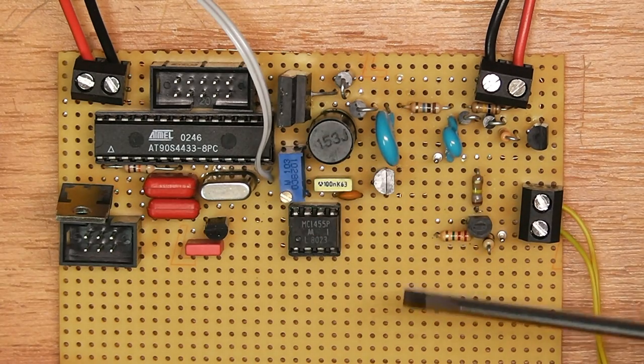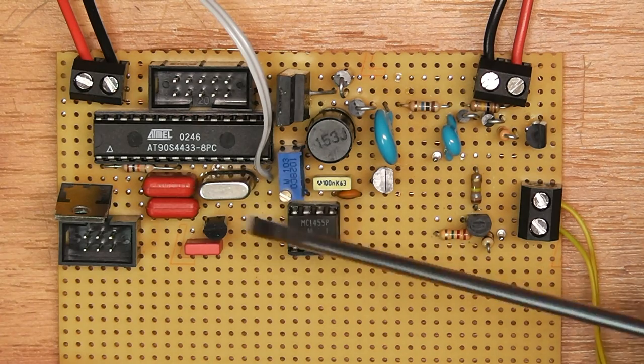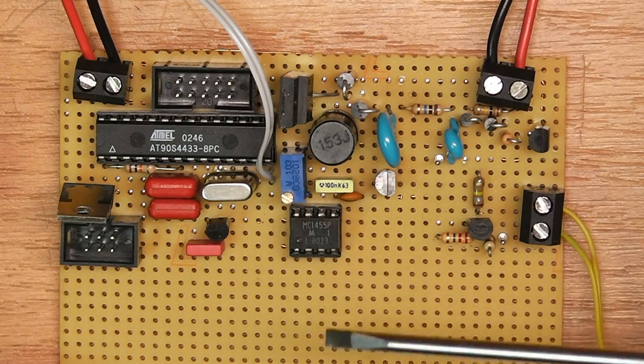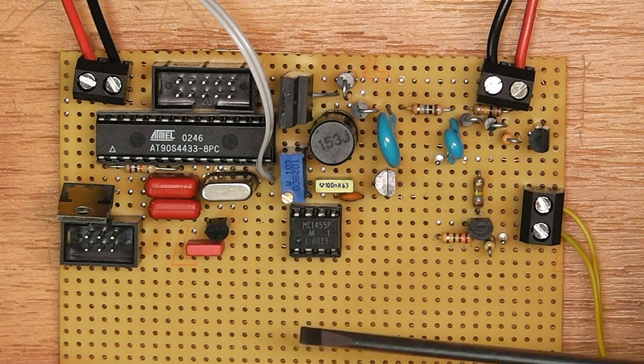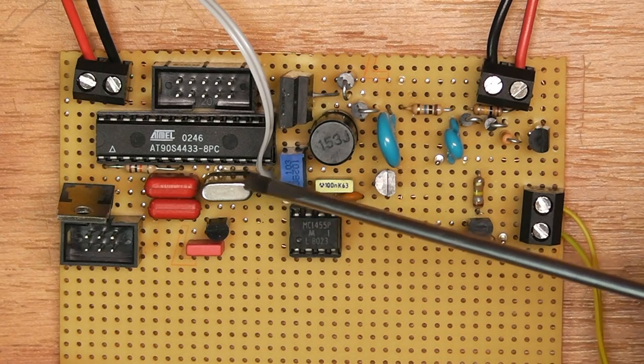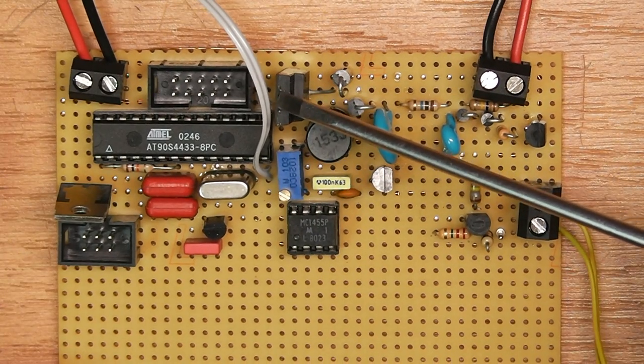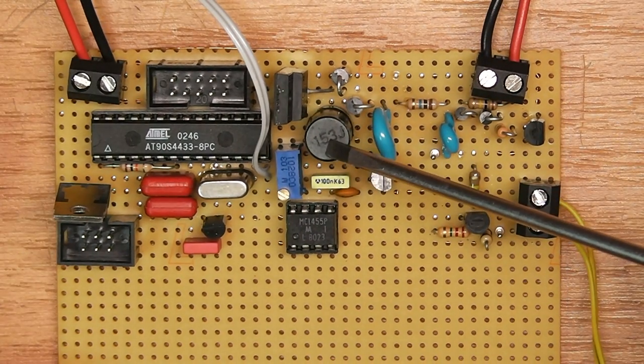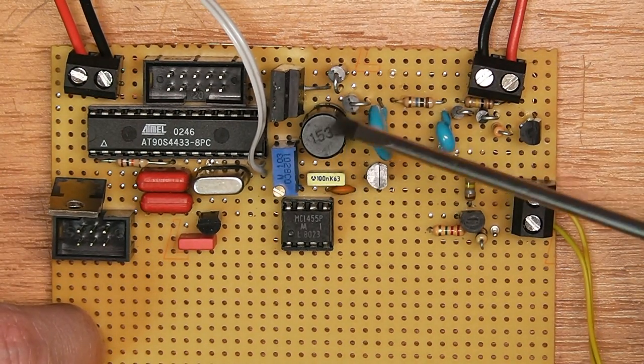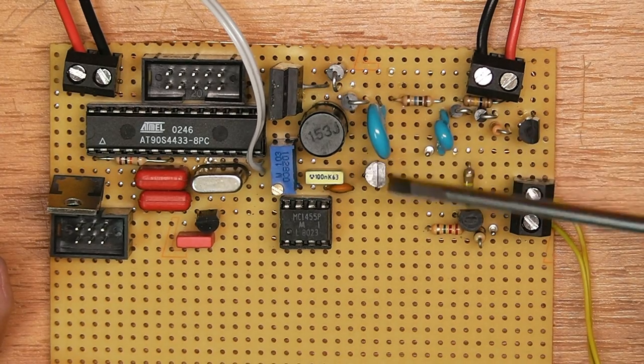Over here you can see the high voltage generation. So the AVR produces a PWM. I like to use the AVR for creating the PWM here because it allows you to select the duty cycle and the frequency appropriately without having to know these parameters beforehand. So this basically triggers the gate of the MOSFET which then charges and discharges the inductor. So we get high voltage spikes here. Those spikes are rectified and run through this 10 nF capacitor.